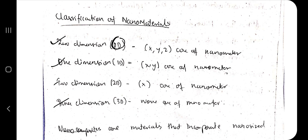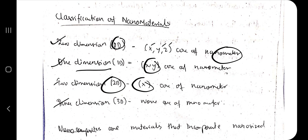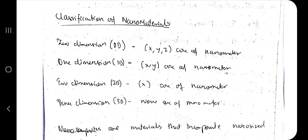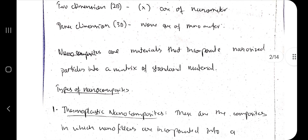Zero-dimension means all three coordinates — x, y, and z — of the material are in the nanometer range. One-dimension means x and y are in nanometer range, two-dimension means just one of them is, and three-dimension means none of them are in the nanometer range. Nanocomposites are materials that incorporate nano-size particles into the matrix of a standard material.